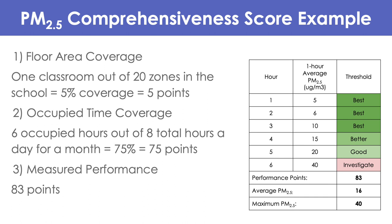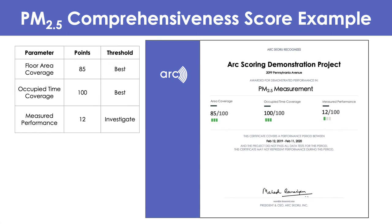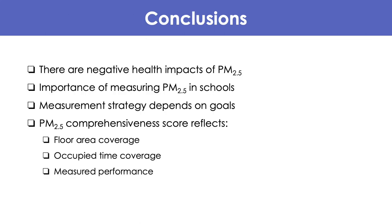Putting it all together for the PM 2.5 comprehensiveness score example: five points for floor area coverage, 75 points for occupied time coverage, and 83 points for measured performance. One certificate shows low area coverage but high occupied time coverage and good measurement performance. Another shows high area coverage and very high occupied time coverage, but pretty low performance — 12 out of 100 means only 12% of measurements were under 35 micrograms per meter cubed. To conclude, we covered negative health impacts of PM 2.5, the importance of measuring in schools, measurement strategies depending on ventilation type and goals, and the PM 2.5 comprehensiveness score reflecting floor area coverage, occupied time coverage, and measured performance.